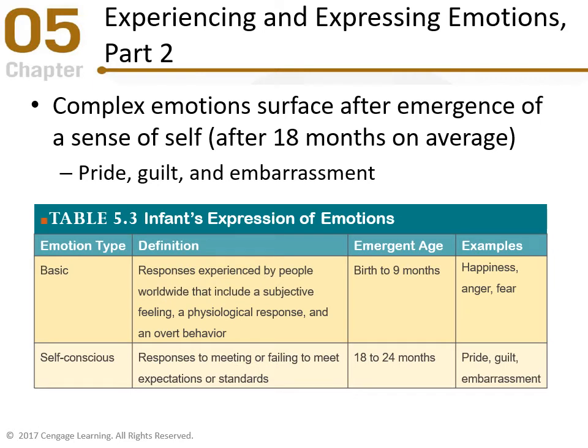Now let's look at complex emotions. Remember that magic 18 months — when the child discovers themselves, the understanding of self. Around 15 to 18 months, they begin to look at pride, guilt, and embarrassment and start to understand those feelings. They must have an understanding of self before they can experience complex emotions. So 18 months is that magical age in early child development for the emergence of complex, self-conscious emotions.